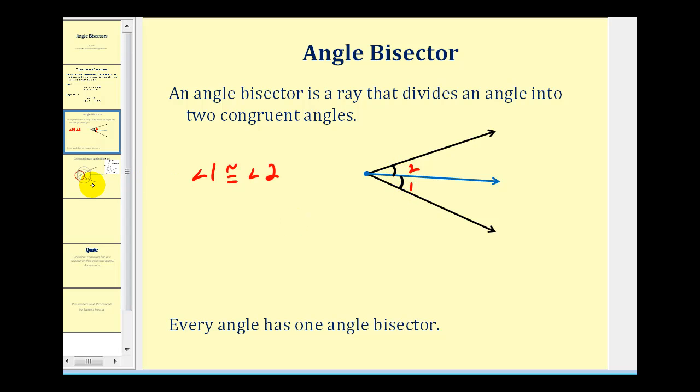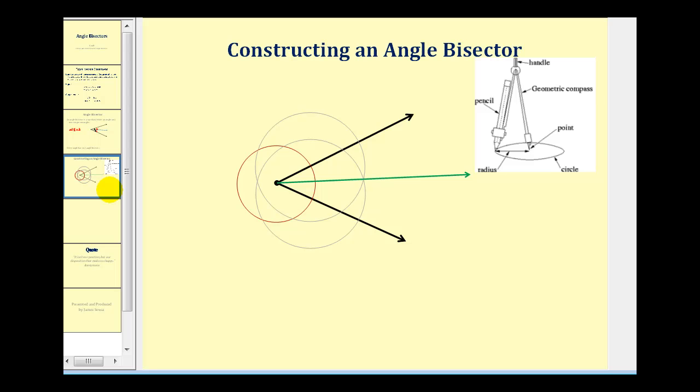Now given an angle, let's talk about how we can construct an angle bisector. And this will require a compass. So the first thing I'm going to do is put the point on the compass at the vertex of the angle, and we either construct a circle or at least swing an arc that intersects both rays of the angle. So something like this.